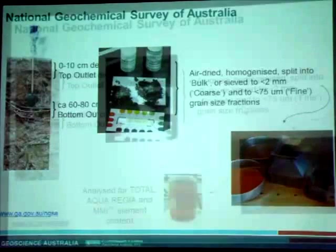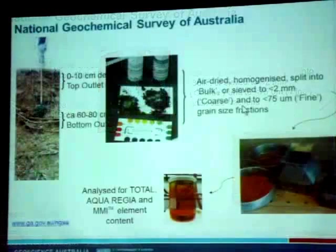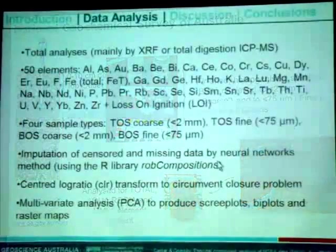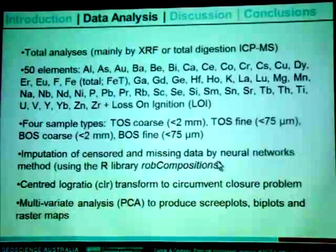On the bulk fraction, we measured things like pH 1-to-5, electrical conductivity 1-to-5, and other properties such as grain size distribution. We then had two sieved fractions — less than 2 millimeters and less than 75 microns — called coarse and fine fractions respectively. With two depths and two grain size fractions, that's four samples per site, across about 1,300 sites, giving almost 6,000 samples analyzed. We also did three geochemical digestions of each sample, so that's approximately 18,000 results.